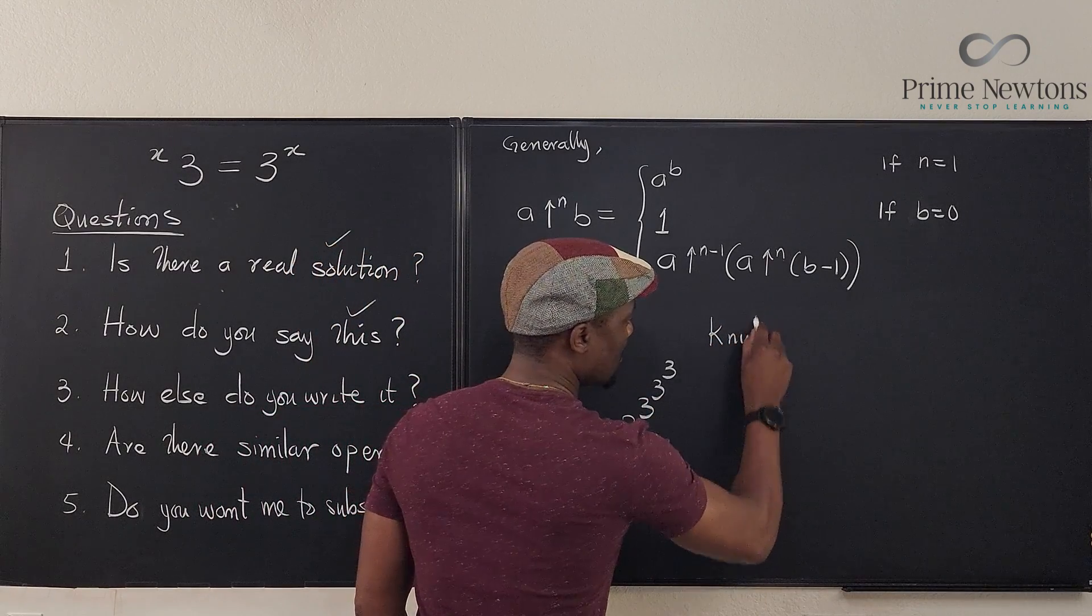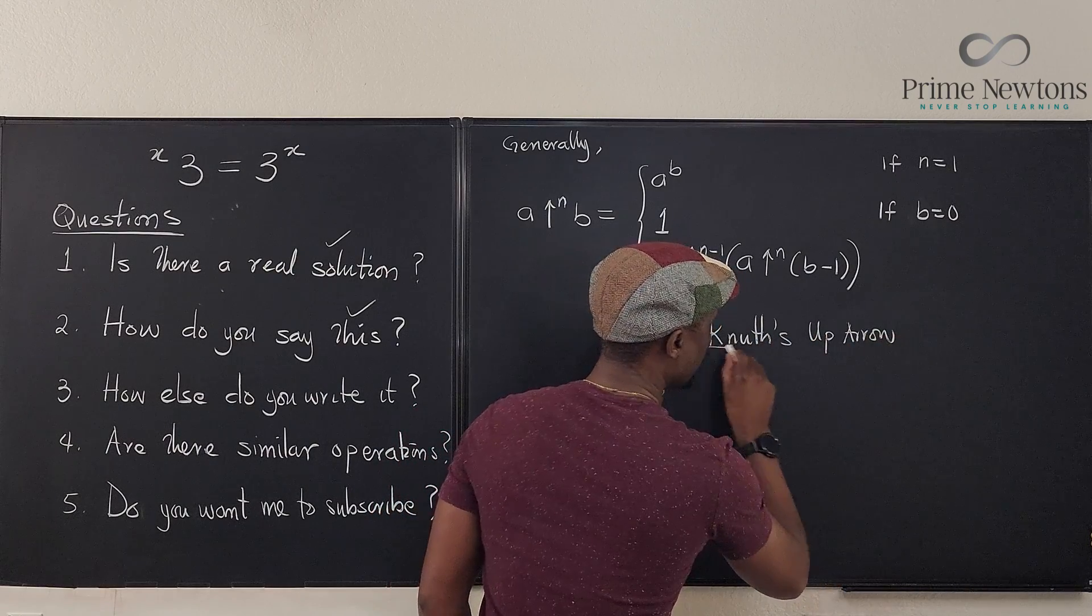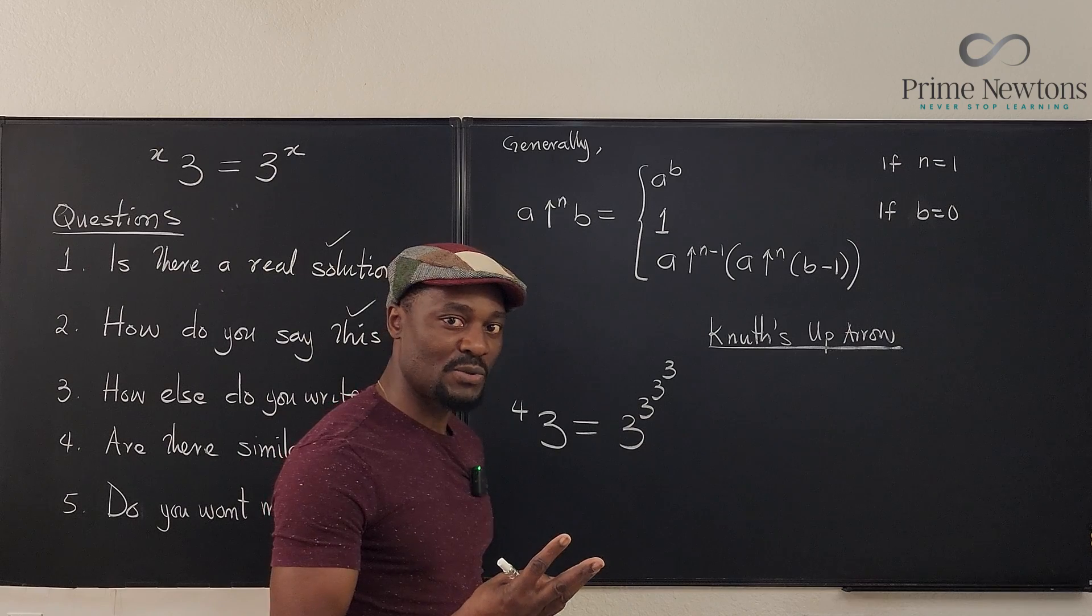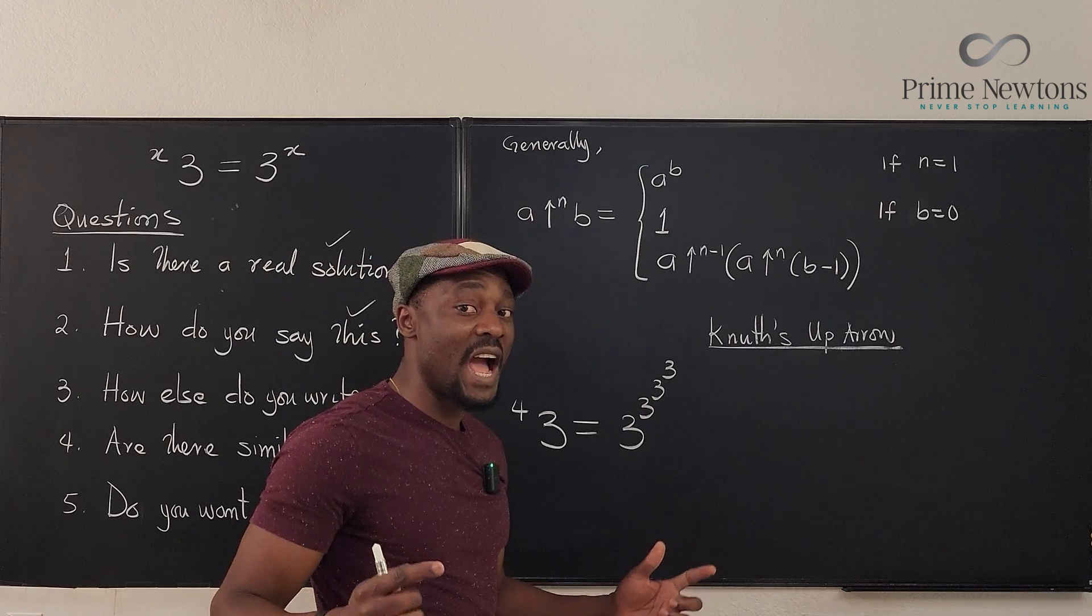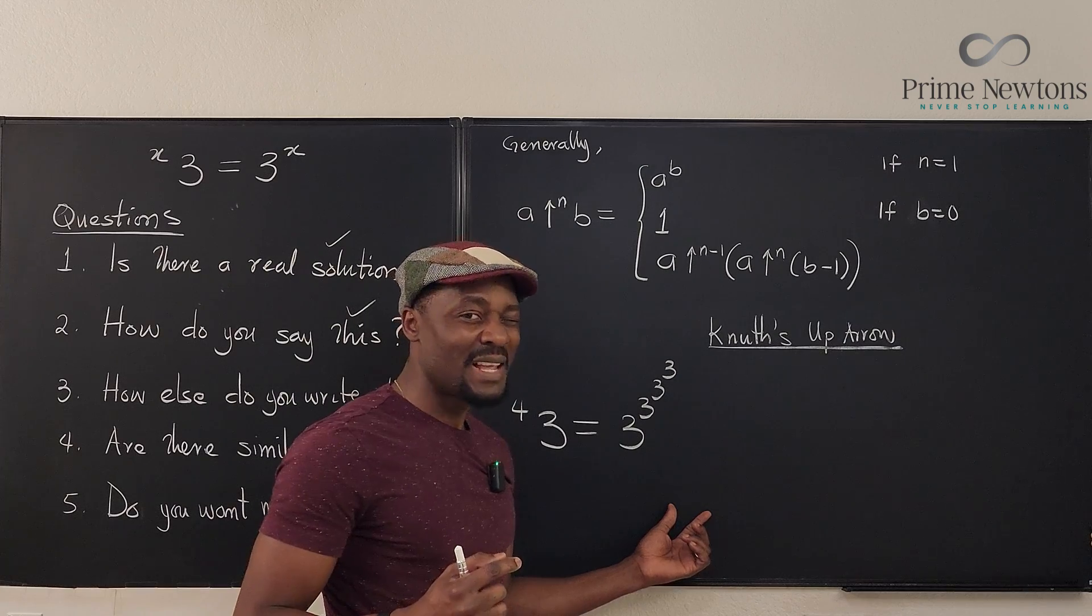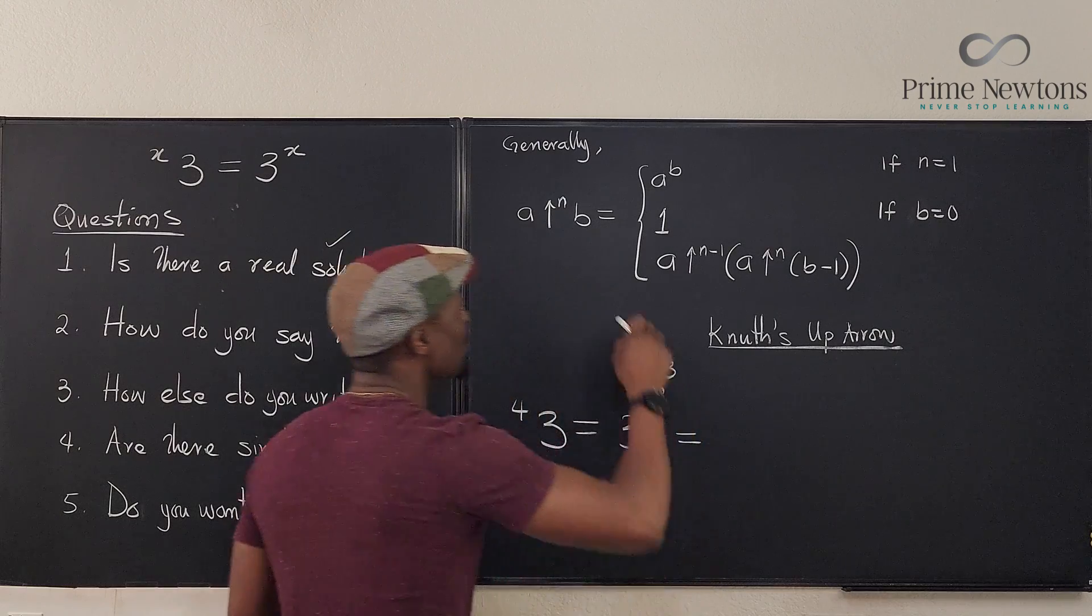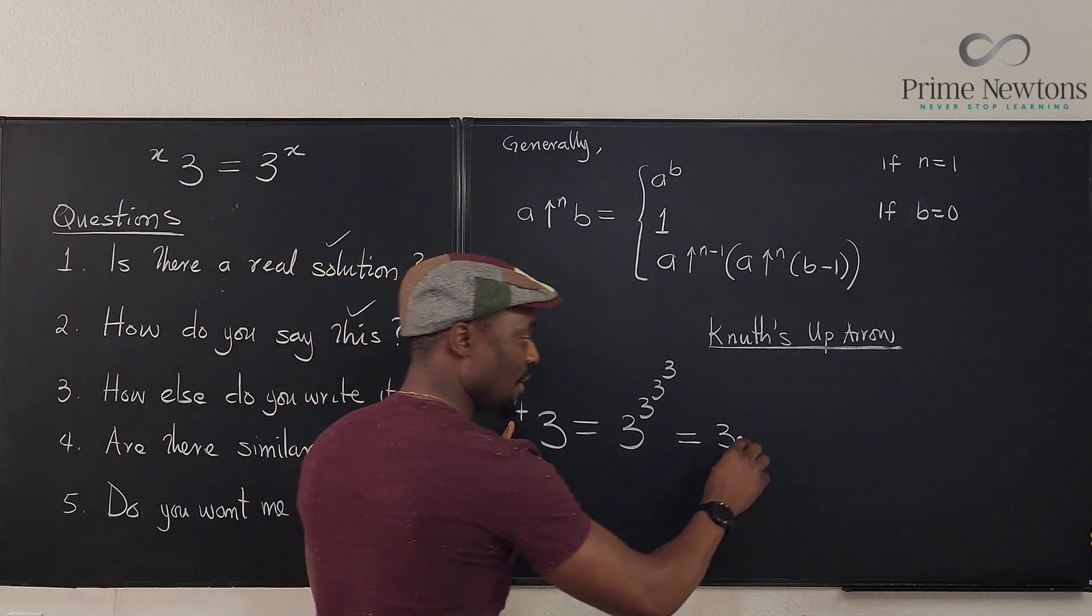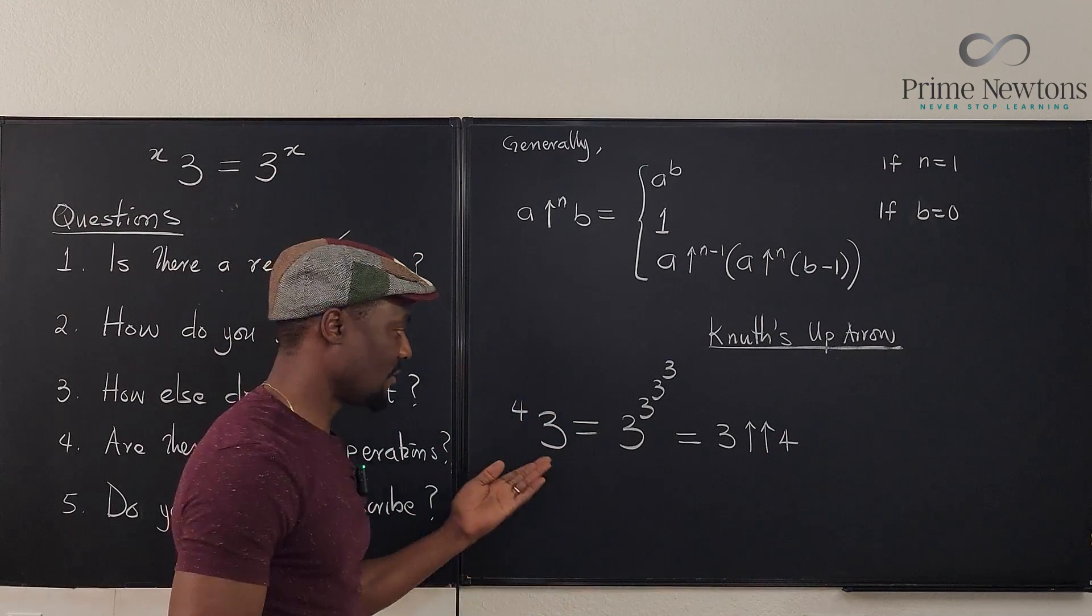But there's another way if you use what is actually the best way to write this, which is Knuth. This is called Knuth's up arrow notation. So let's write it here. It's called Knuth's up arrow. If you use one arrow, it means exponential. Two arrows, tetration. Three arrows, pentation. Four arrows, hexation. And the number of arrows just keeps going. Now there's a video that I'm working on, and I'm going to tell you that there are many arrows, I'm talking about billions of arrows coming in. So how else do we write this? Well, if we use Knuth's notation, it's going to be three. Because this is tetration, it's going to be two arrows, and there's going to be a four. That's how you write it.